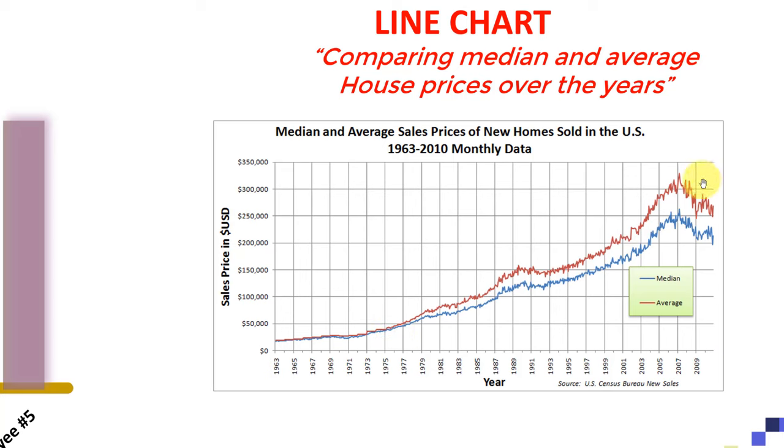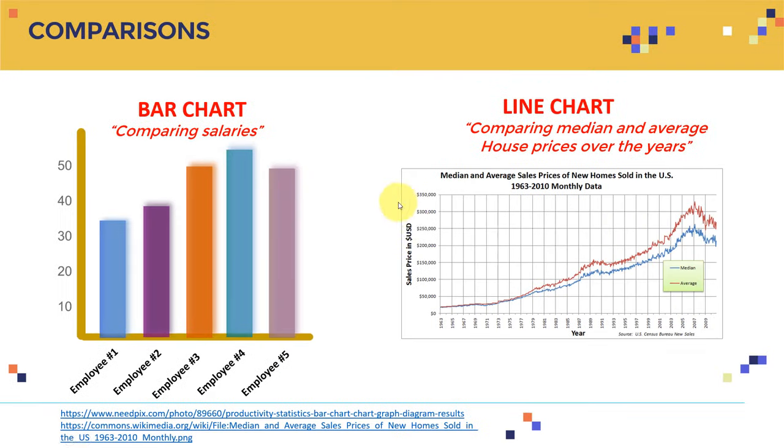However, right now in 2009, you need like $300,000. So basically, the value of the dollar diminishes extensively. I can read all that information from the line chart, and I can also compare the median and the average between the two right away in one stop shop. That's why line chart and bar chart can be used for comparisons.